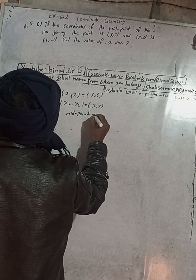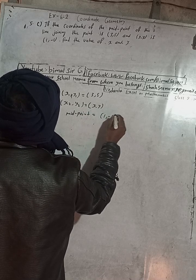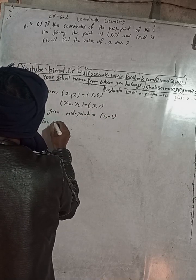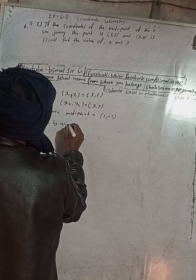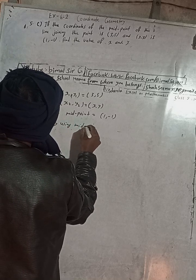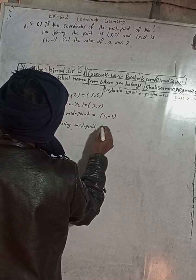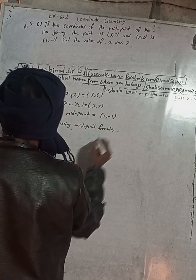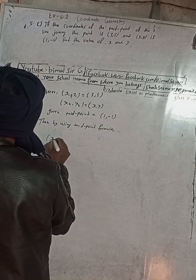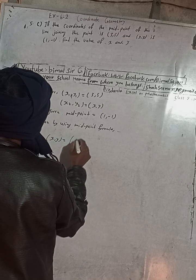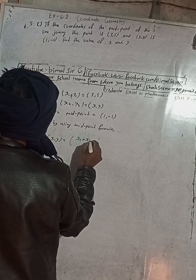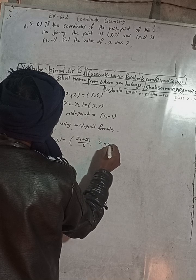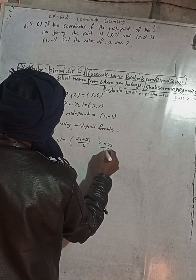Given midpoint is equal to 1 comma minus 1. Then by using the midpoint formula, we can write: x comma y is equal to x1 plus x2 by 2 comma y1 plus y2 by 2.